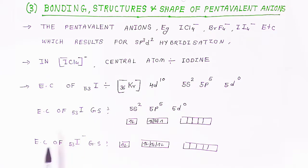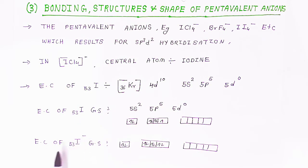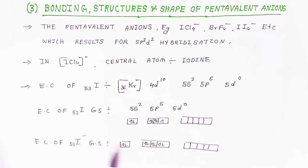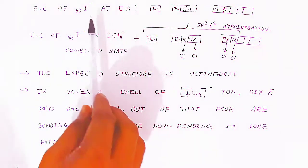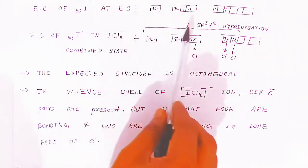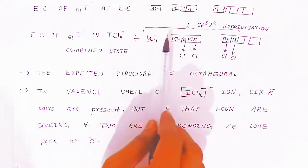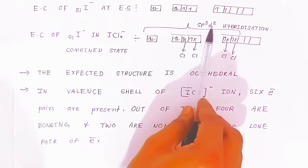When iodine accepts one electron, it converts to iodide (I⁻) with negative charge. The electronic configuration of the iodide anion (I⁻) at the ground state becomes 5s², 5p⁶. When 4 chloride atoms approach the iodide, excitation takes place — one electron migrates to the 5d orbital — and then sp³d² hybridization takes place.